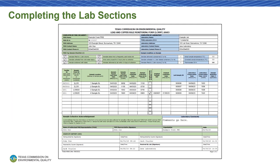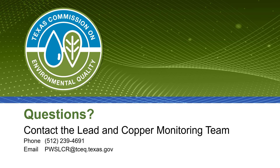With this, we have completed the Lead and Copper Rule Monitoring Form 20683. Please double-check what you've entered on this form, and once you have, it is ready to be submitted to TCEQ. If you have any additional questions on completing this form, feel free to reach out to the TCEQ Lead and Copper Monitoring Team by phone at 512-239-4691 or by email at pwslcr.tceq.texas.gov.